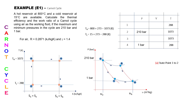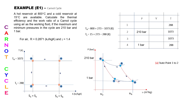For state point 2, pressure 210 bar and temperature 1073 Kelvin are given, so you can immediately use the ideal gas formula PV = RT to find the specific volume — there is only one unknown. The specific gas constant R is 0.2871. Since no mass is given in the question, we use PV = RT where V is the specific volume.